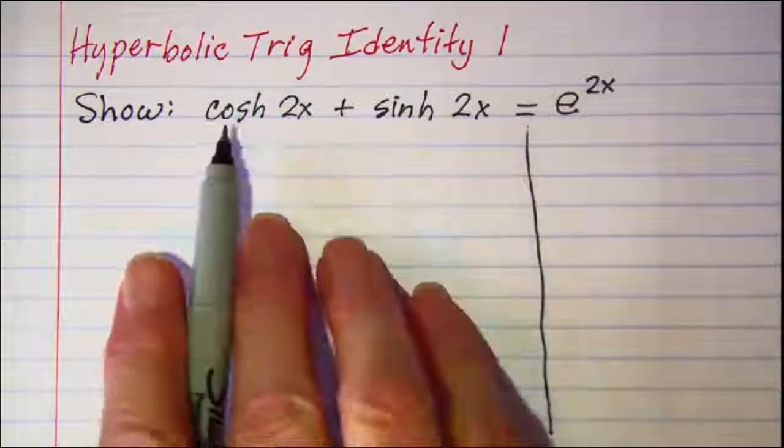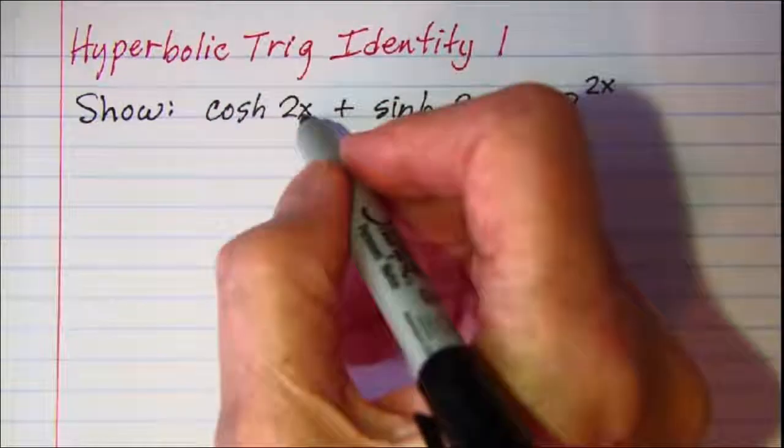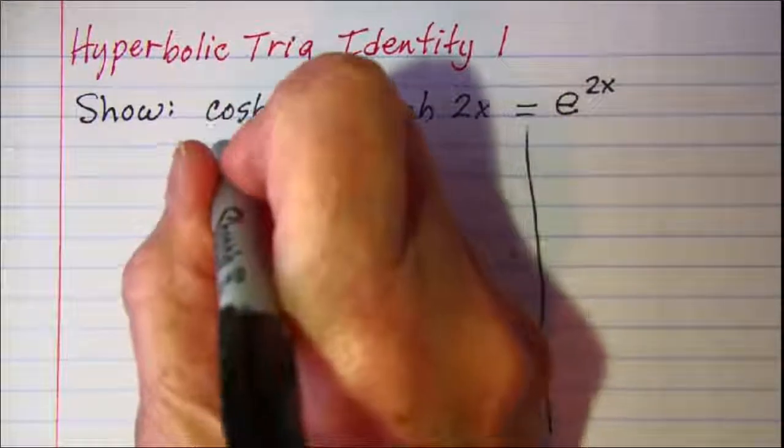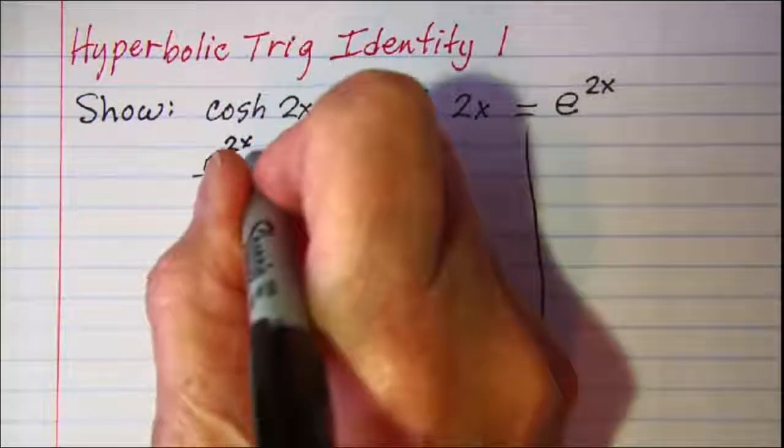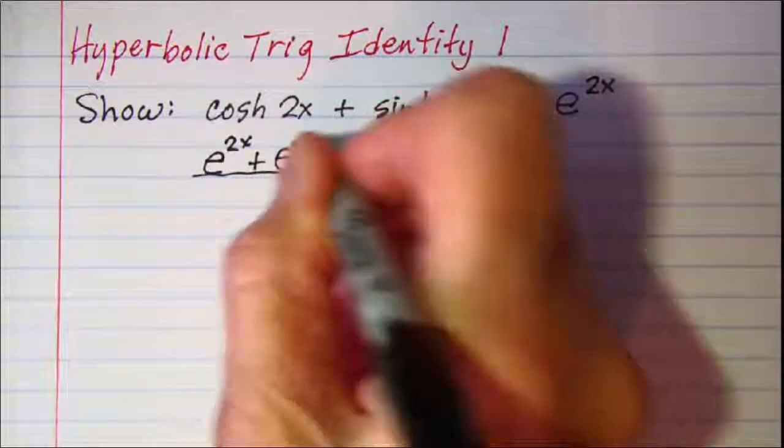By definition, our hyperbolic cosine of 2x is e to the 2x plus e to the negative 2x divided by 2.